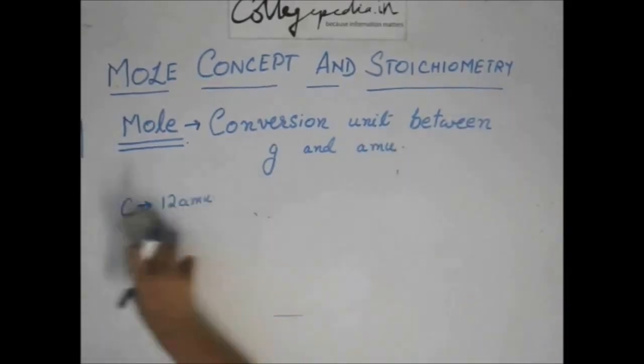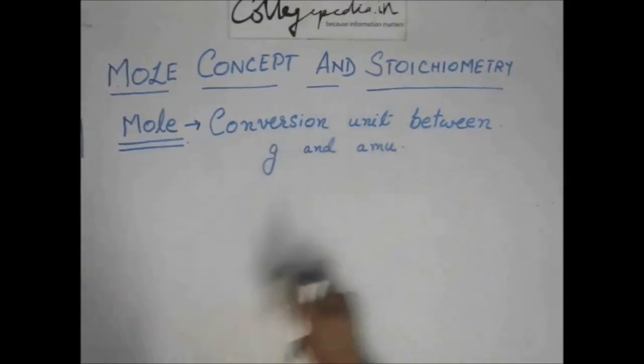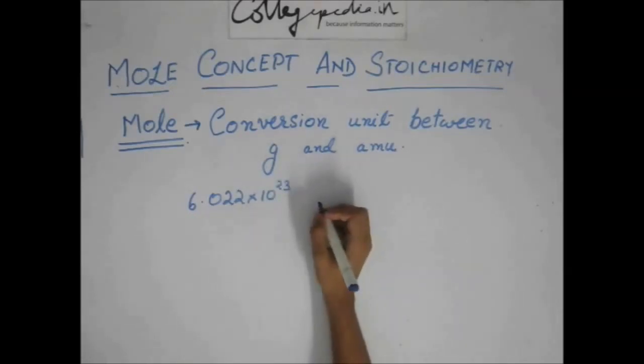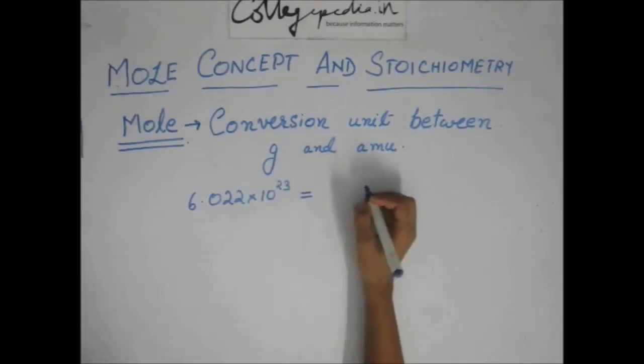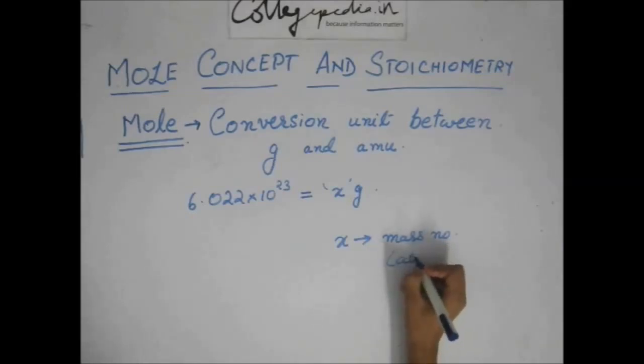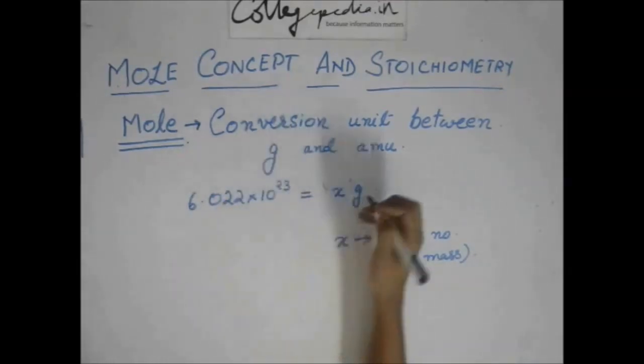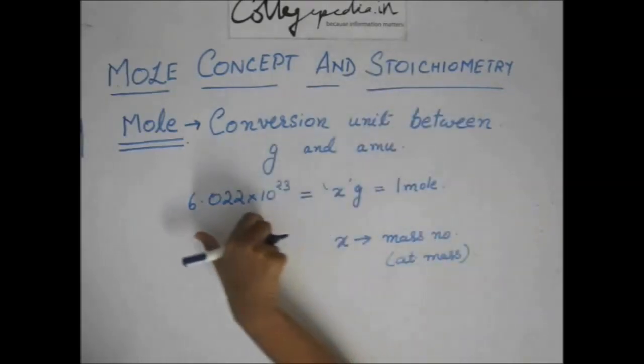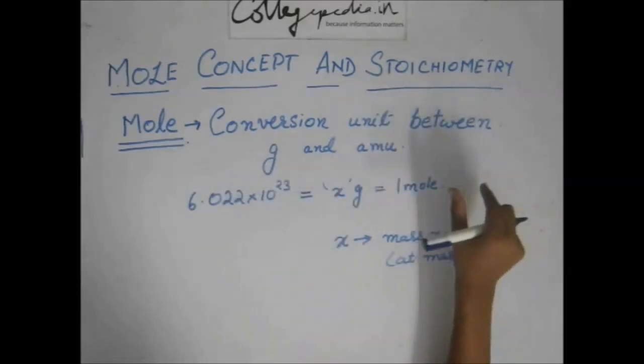So, the conclusion we get to is that this 6.022 into 10 to the power 23 is equal to x gram of that compound, where x is nothing but its mass number or you can say atomic mass. Because this is equal to one mole and this is also equal to one mole.